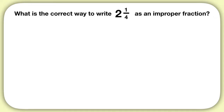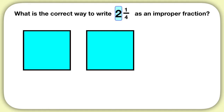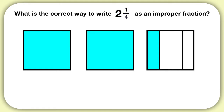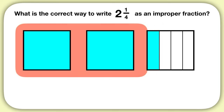The first thing we can do is draw our mixed number. We'll draw two wholes as two squares, then we'll draw 1 fourth more as 1 fourth of a square. Now to write this as an improper fraction, we have to represent this whole quantity but without using whole numbers. We need to rewrite these two wholes. We can split these wholes up into fractions. Because we're working with fourths, let's split each square into fourths.